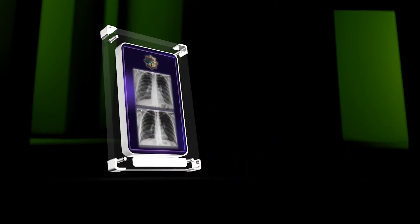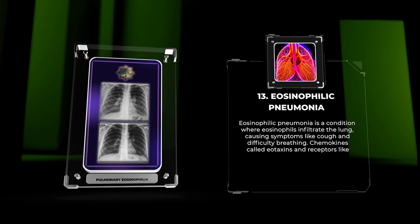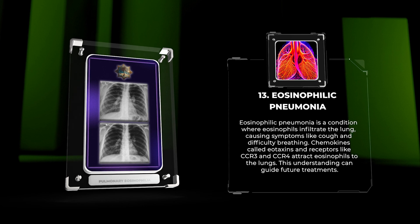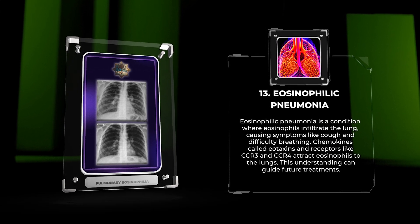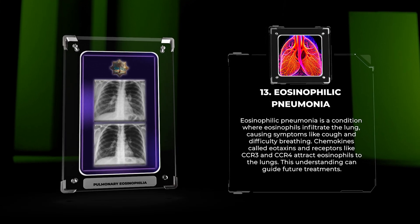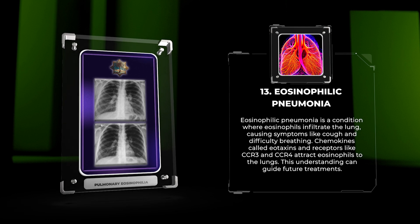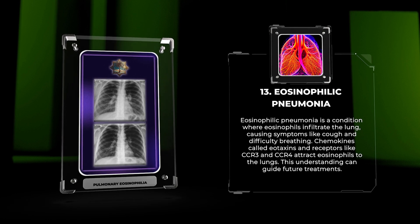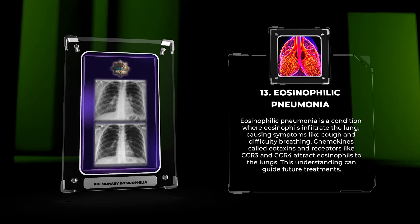Eosinophilic pneumonia is a condition where eosinophils infiltrate the lung, causing symptoms like cough and difficulty breathing. Chemokines called eotaxins and receptors like CCR3 and CCR4 attract eosinophils to the lungs. This understanding can guide future treatments.